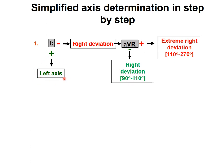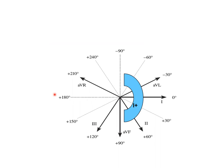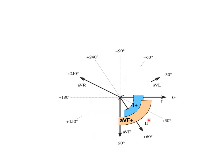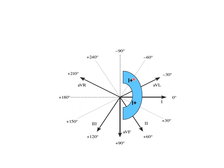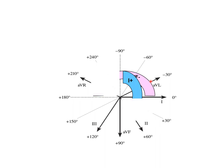Now let's look at the left axis when we have lead 1 positivity. Which lead do we look at next? AVF. Lead number 1 positive means we are on the left side. If AVF is also positive, we have a normal axis.